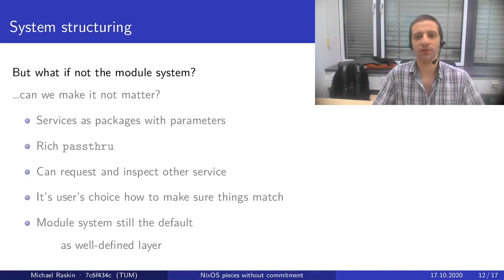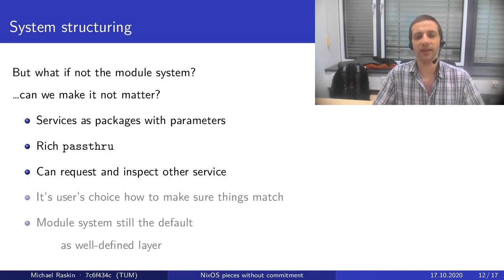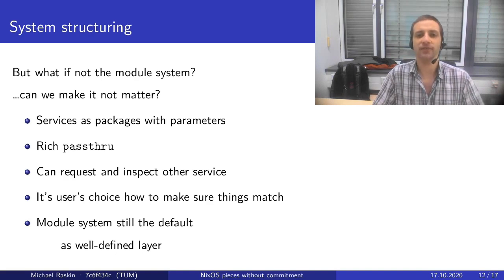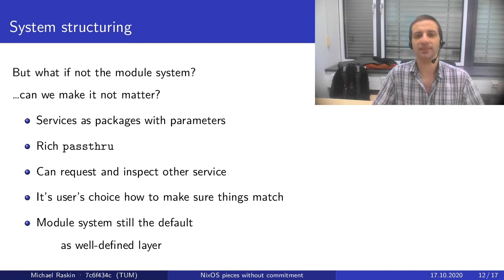On the other hand, the question "what if not the module system?" may be the wrong question. The better question is: can we make it not matter? Services could be like packages — packages with parameters that provide rich pass-through, requesting and inspecting other service instances. Then it's the user's choice how to ensure everything gets passed and every service gets a correctly configured instance of its dependencies. The module system would be the default and the only thing supported by mainline NixOS, but it would be easier to extract and replace, with a well-defined top-level layer and clean separation of responsibilities.